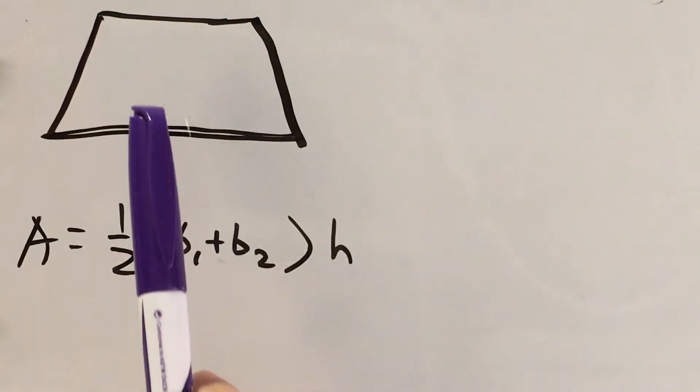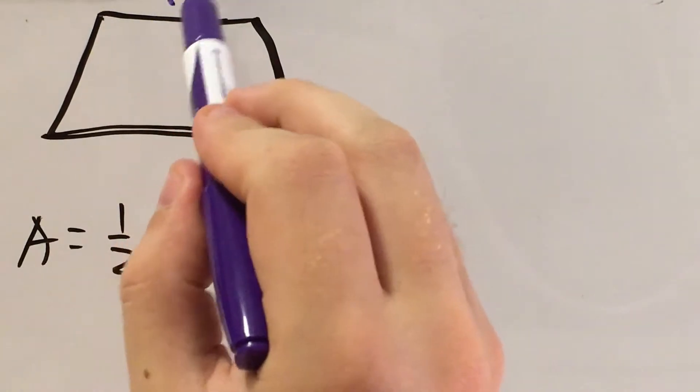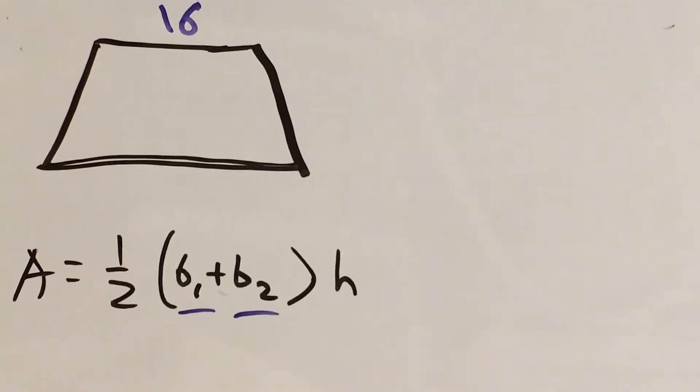Alright, so here is a very poor drawing of an isosceles trapezoid, and here is the formula for the area of a trapezoid. Now the problem gave us our two bases.